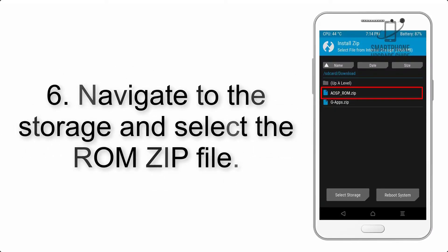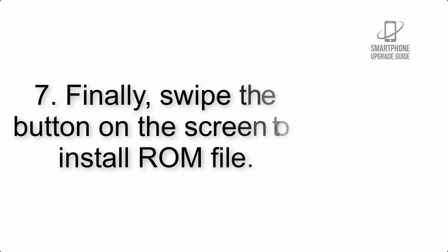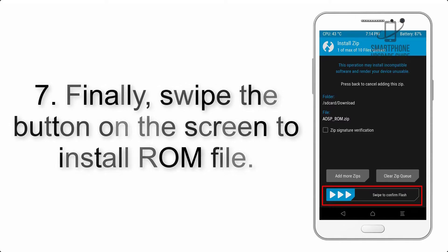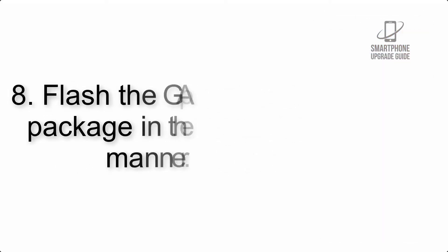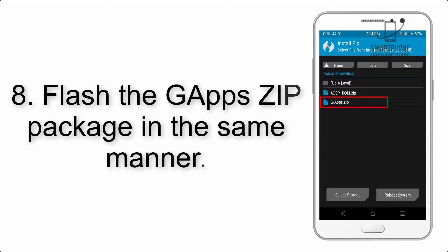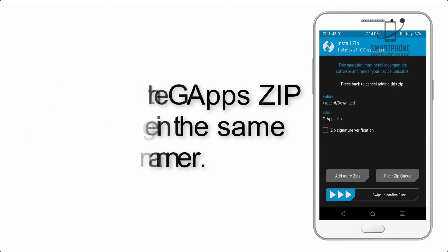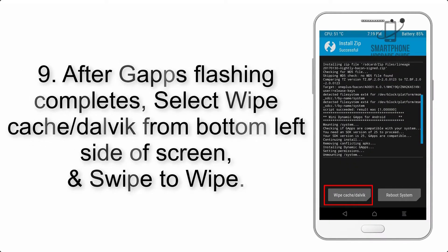Step 5: Go back to the recovery main screen and tap on the Install button. Step 6: Navigate to the storage and select the ROM zip file. Step 7: Finally, swipe the button on the screen to install the ROM file.